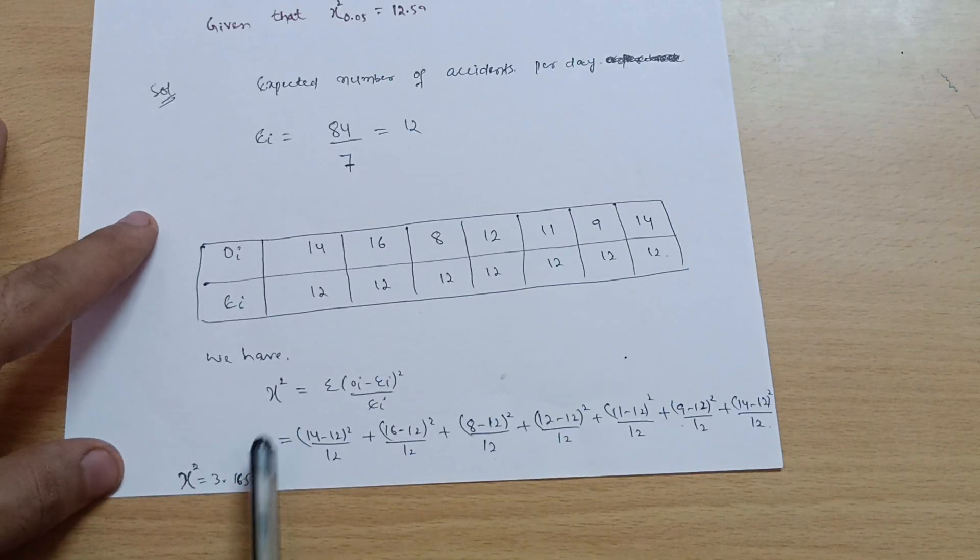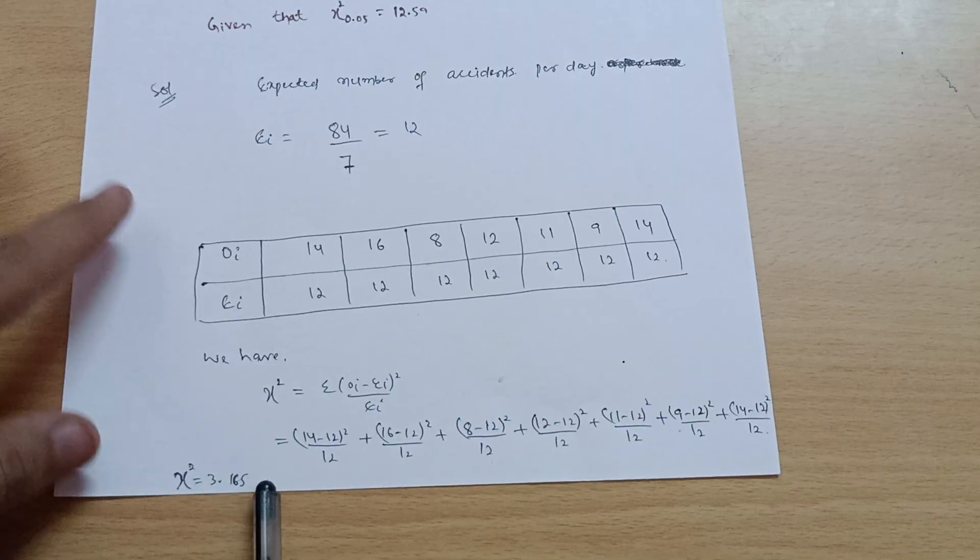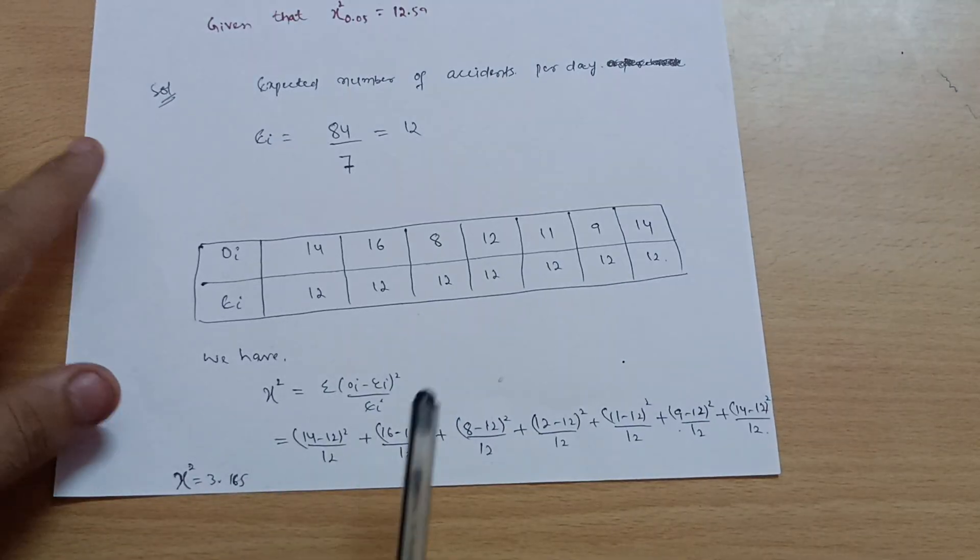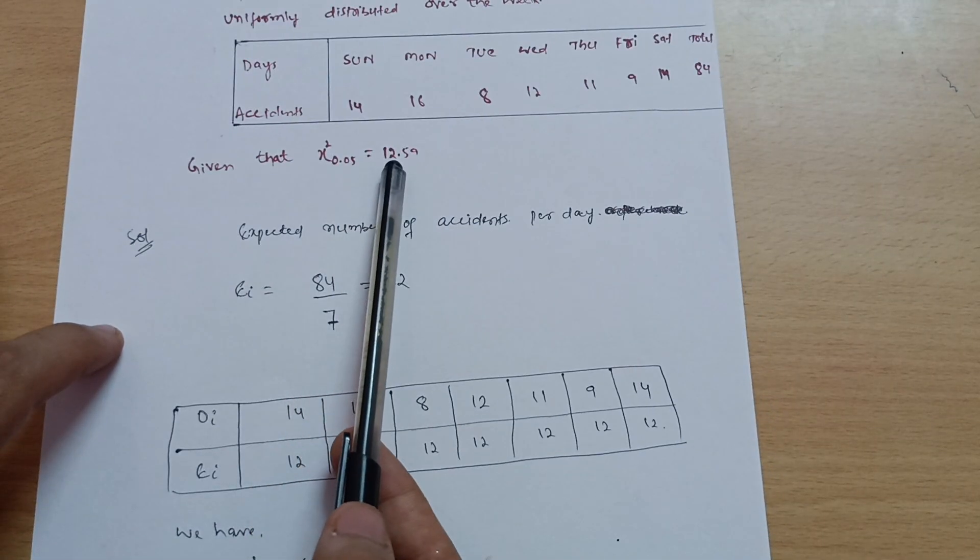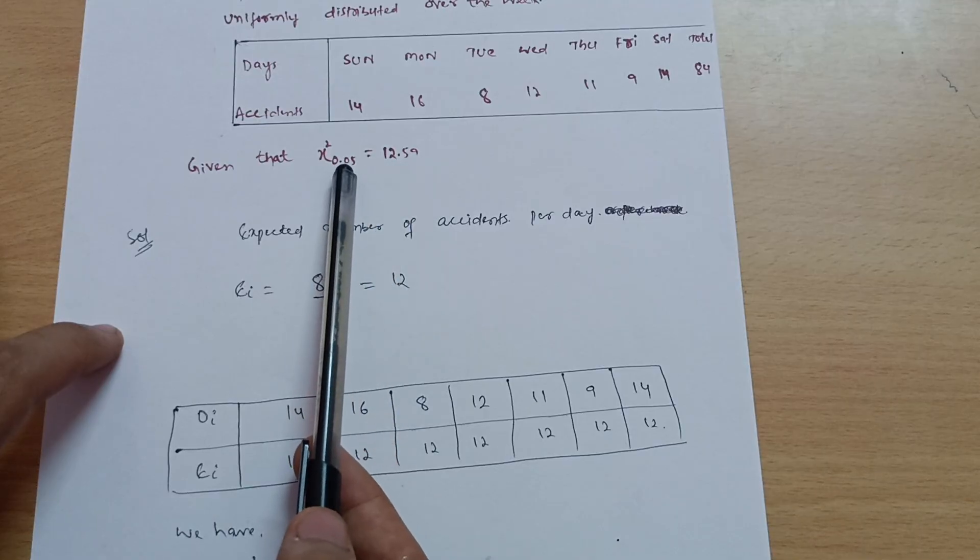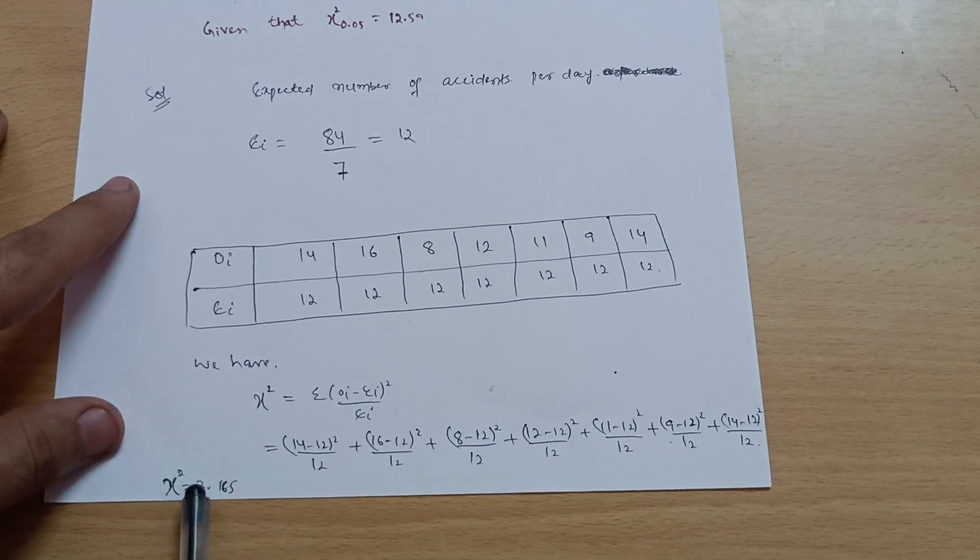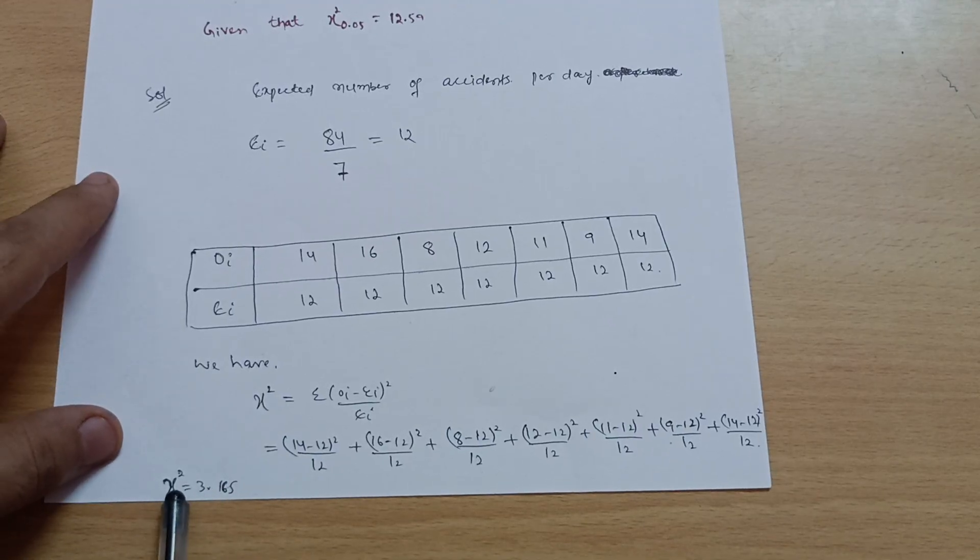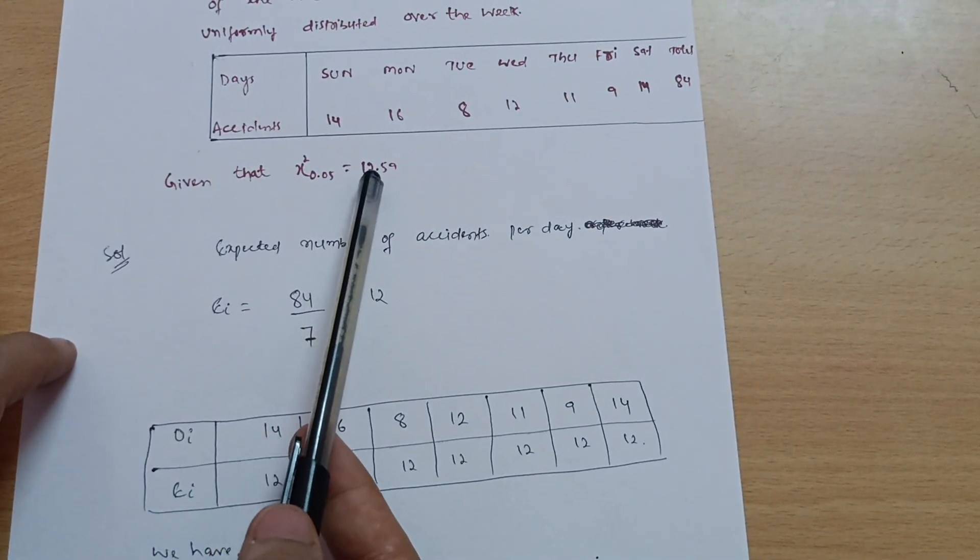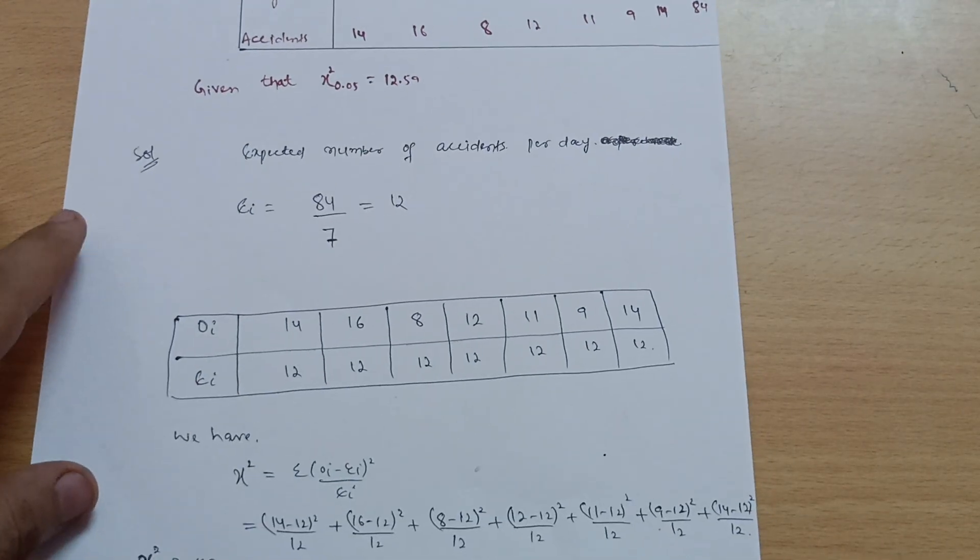You will get chi-square is equal to 3.165. So in the given problem it is 12.59 at 5% level of significance, but we are getting 3.165. Therefore, you can write down in the conclusion: since chi-square equals 3.165, which is less than the given value 12.59, therefore our hypothesis will be accepted. This is the solution for this particular problem.